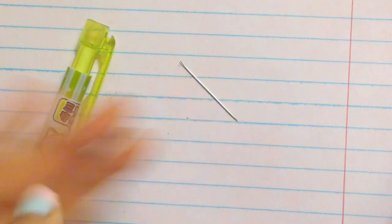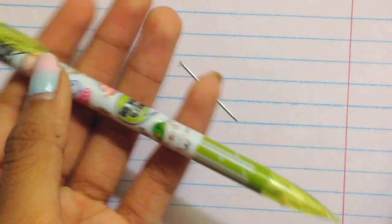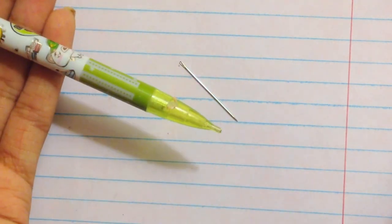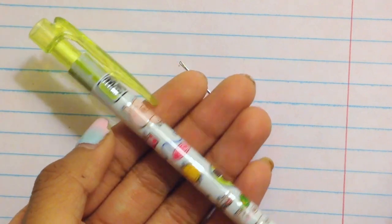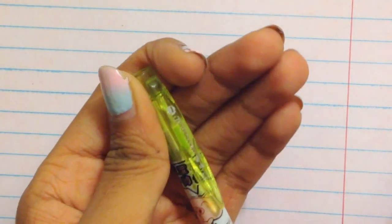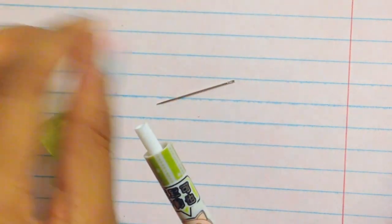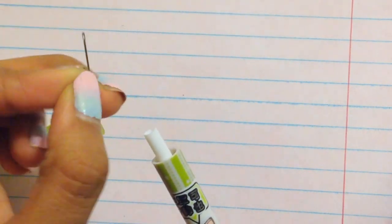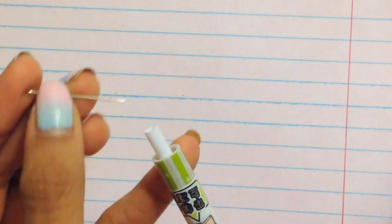So for the next tutorial you'll need a needle and a mechanical pencil. With the mechanical pencil you're going to take off the cap and insert the needle with the pointy side facing downwards, and go ahead and put it in.